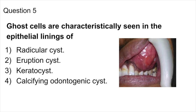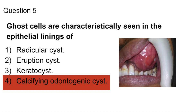Question 5. Ghost cells are characteristically seen in the epithelial lining of: radicular cyst, eruption cyst, keratocyst, or calcifying odontogenic cyst. The answer is calcifying odontogenic cyst. Ghost cells are also found in compound odontoma, ameloblastic fibro-odontoma, and craniopharyngioma. So the answer is calcifying odontogenic cyst. Thank you.